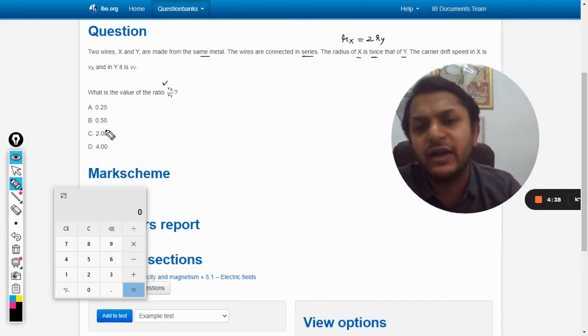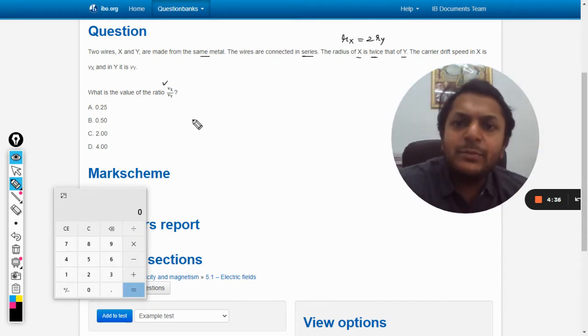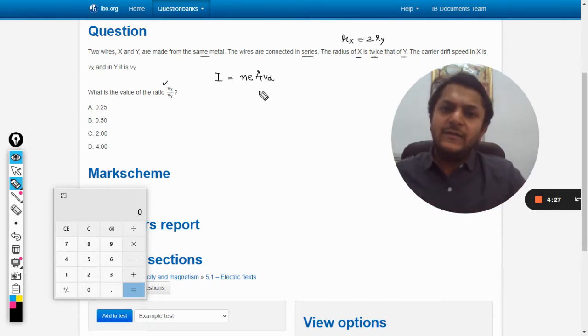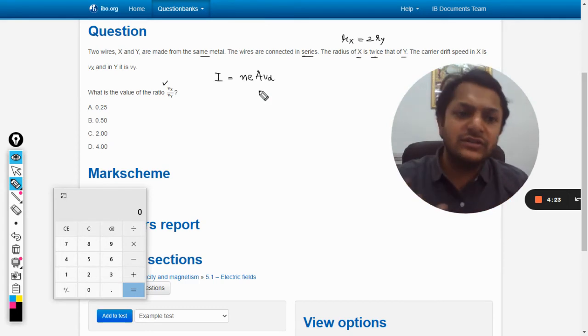In this topic we have a straightforward formula that is the current I is given as I equals neavd, or you can call it neav as per your books and your notations.